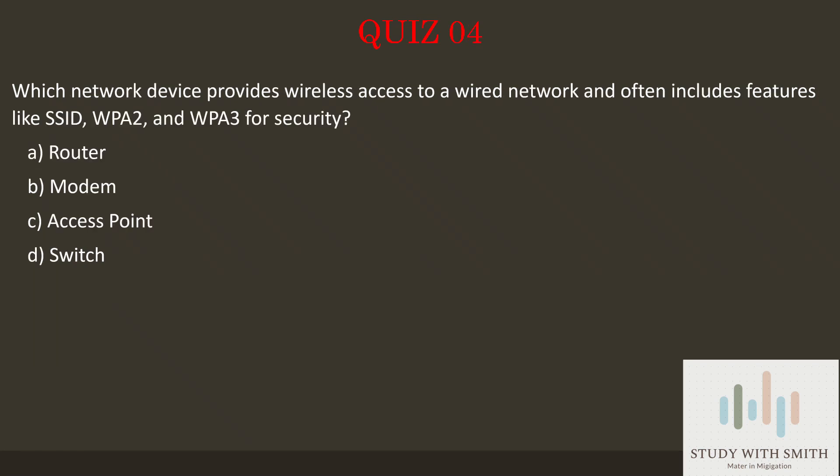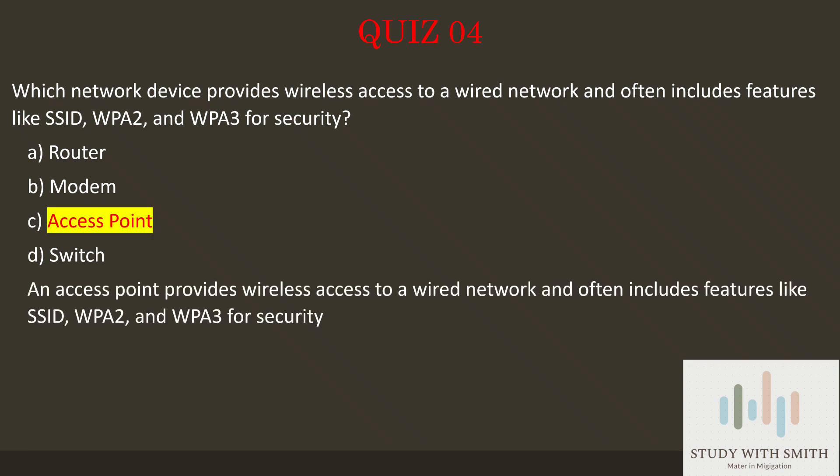Question 4: Which network device provides wireless access to a wired network and often includes features like SSID, WPA2, and WPA3 for security? Pause the video now to select the best answer. The answer is C — Access Point. An access point provides wireless access to a wired network and often includes features like SSID, WPA2, and WPA3 for security.